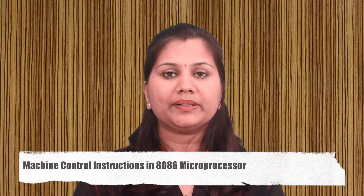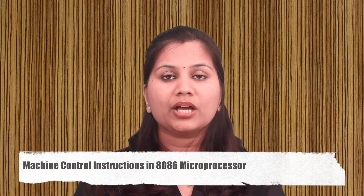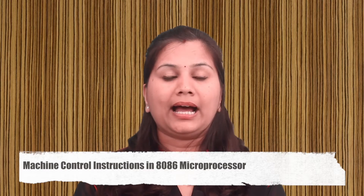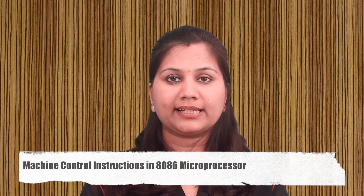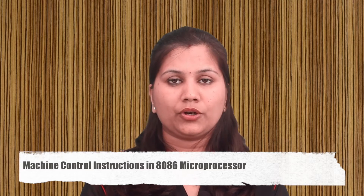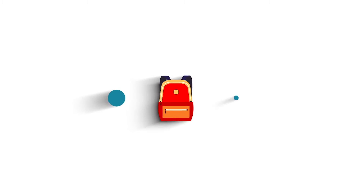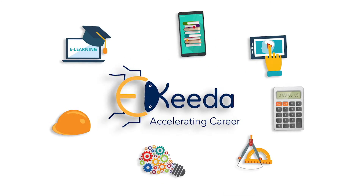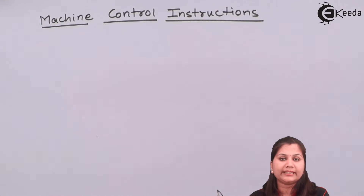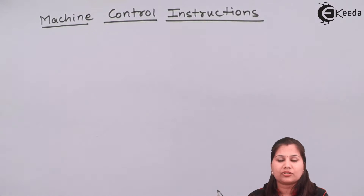Hello friends. In this video we will study the machine control instructions which are present in the instruction set of the 8086 microprocessor. Under this category we have different instructions like WAIT, HALT, NOP, ESCAPE, and LOCK instructions. Machine control instructions are those instructions which directly control the operations of the 8086 microprocessor — they have a direct influence on the microprocessor operations.